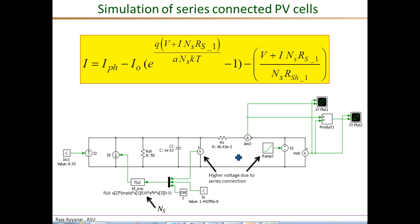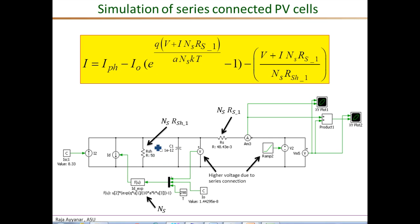The next change is in the voltage sweep range. For a single cell we swept from 0 to approximately 0.62 V; here we sweep from 0 to about 6.2 V for 10 cells in series. Therefore, the voltage appearing across the diode represented by the controlled current source is 10 times higher. The series resistance is scaled by NS, so its value is 10 times larger than a single cell, and the shunt resistance is similarly scaled by a factor of 10.